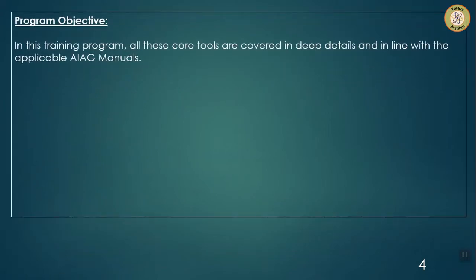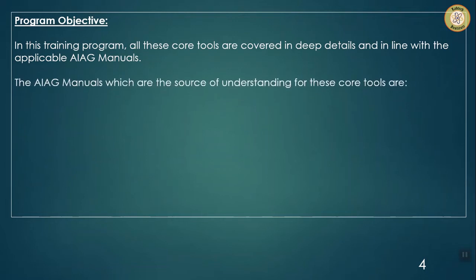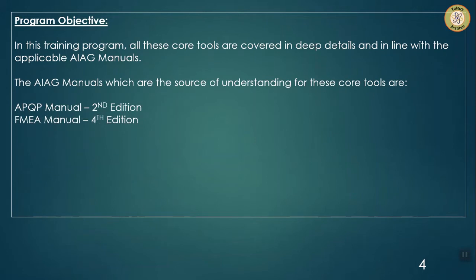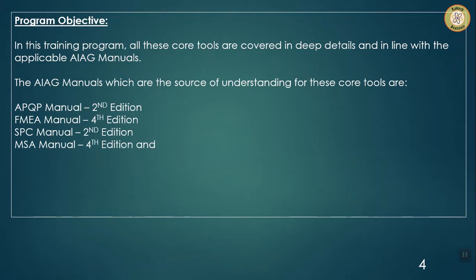In this training program all these core tools are covered in deep detail and in line with the applicable AIAG manuals. The AIAG manuals which are the source of understanding for these core tools are: APQP manual, second edition; FMEA manual, fourth edition; SPC manual, second edition; MSA manual, fourth edition; and PPAP manual, fourth edition.